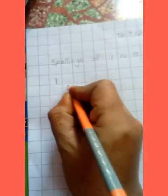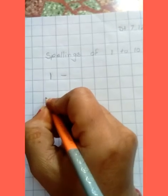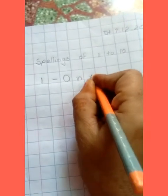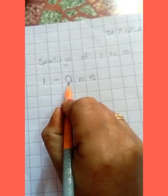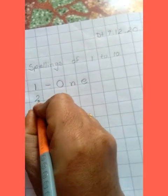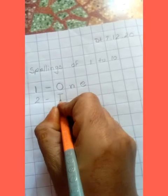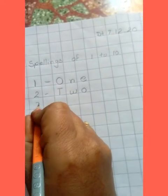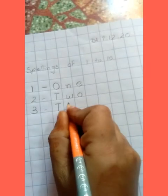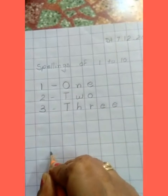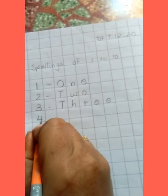So let's start. Write down number one: O-N-E. The first letter is always capital. Number 2: T-W-O. Number 3: T-H-R-E-E.